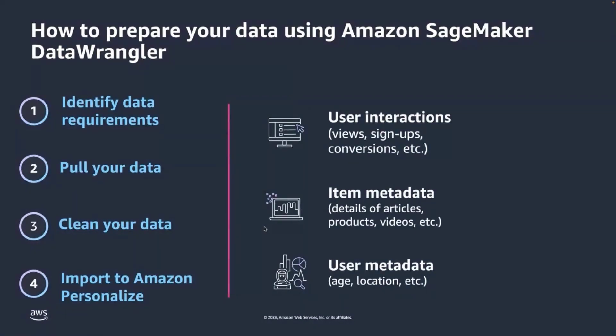For the rest of the talk, I'll focus on step one — preparing the data — and how this integration makes it seamless. On a high level, the steps involved are: identifying dataset requirements like user interactions, item metadata, or user demographic data; pulling your data from your sources, be it Redshift, Snowflake, Athena, or S3; applying transformations for cleaning datasets; and then importing it into Amazon Personalize. The integration with Data Wrangler allows you to do all these steps using a visual click interface.